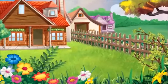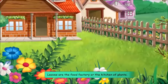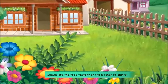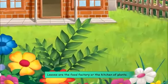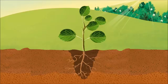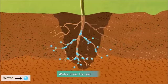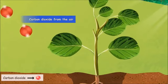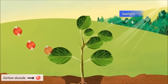In the same way, leaves that are the food factory or the kitchen of a plant need different ingredients for making its food. These ingredients include water from the soil, carbon dioxide from the air, and sunlight.